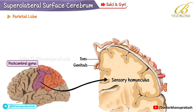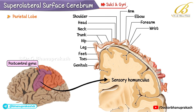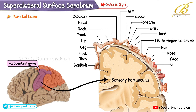The sensory homunculus body map progresses from medially to laterally: genitals, toes, feet, leg, hip, trunk, neck, head, shoulder, arm, elbow, forearm, wrist, hand, little finger to thumb, eye, nose, face, lips, oral cavity, tongue, and pharynx.